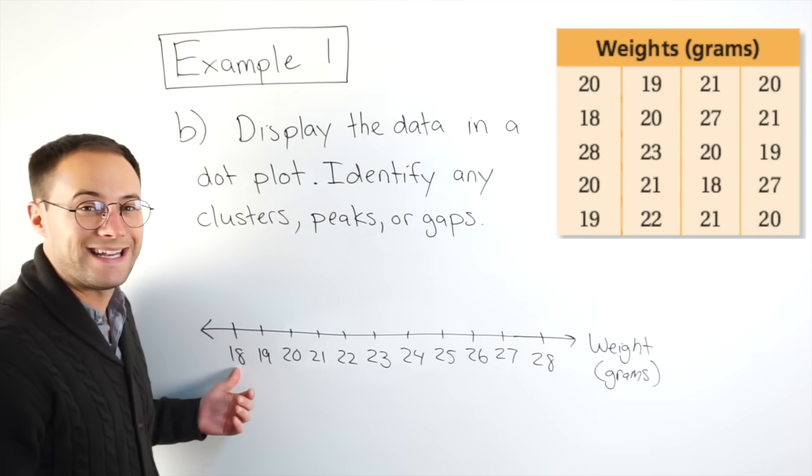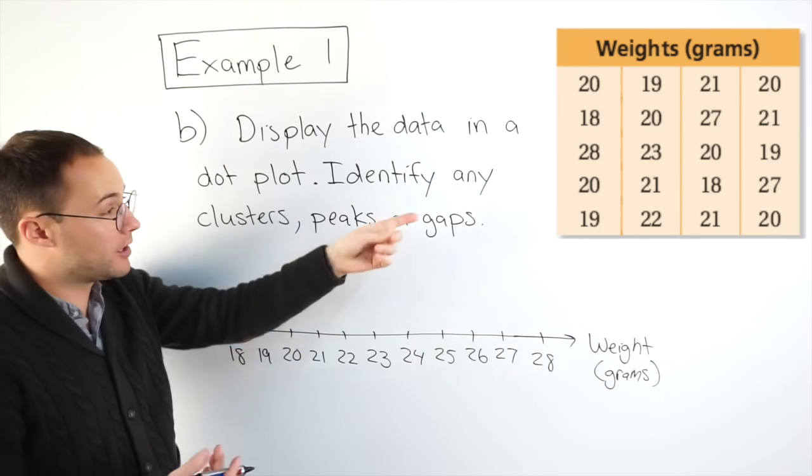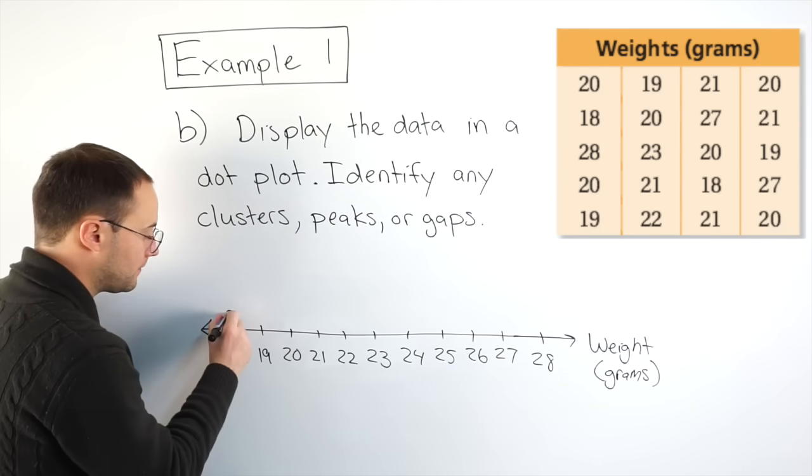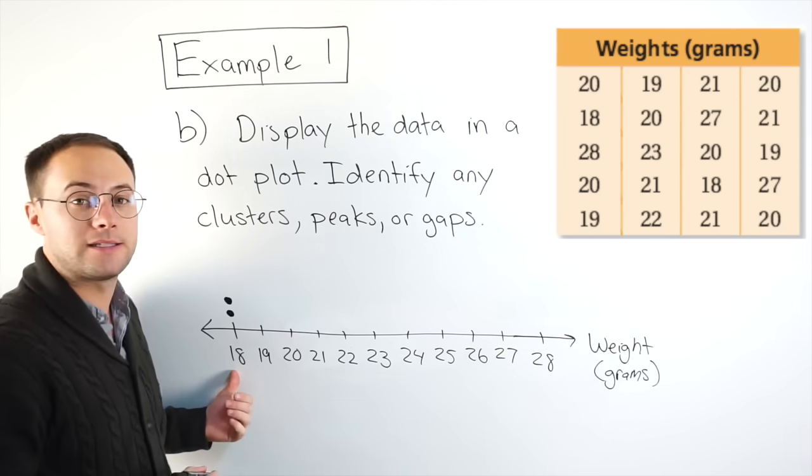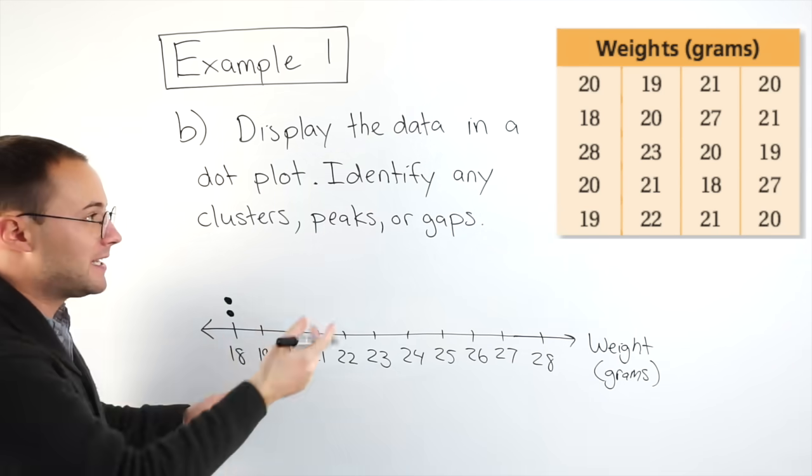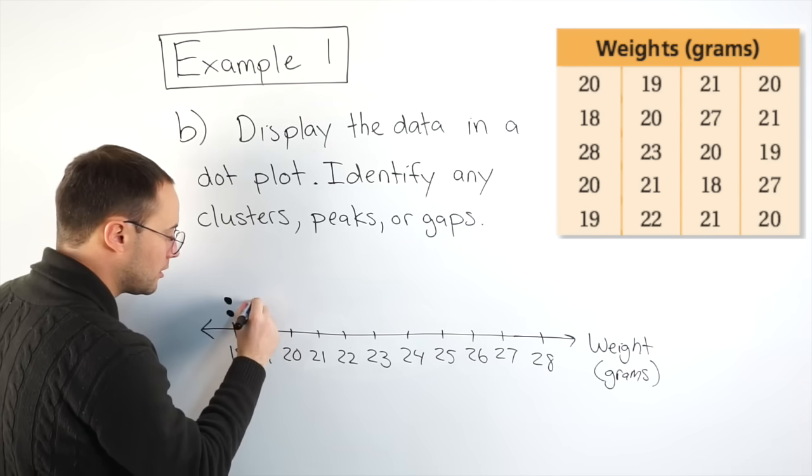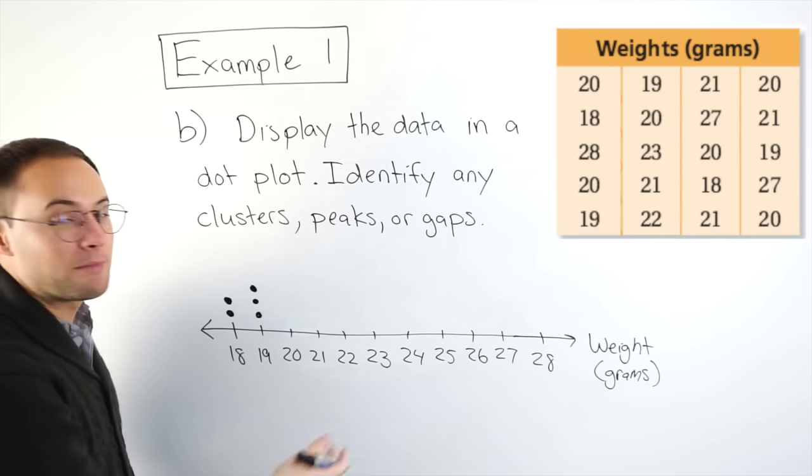And then we just look at the data and put dots. So at 18, how many mice weighed 18 grams? Well, if I look at my data, I can count two. So I put one, two. Just two dots right above that number 18. And I keep going. So 19, if I look, there were three. So I'm going to do one, two, three, like that. And we'll keep going.